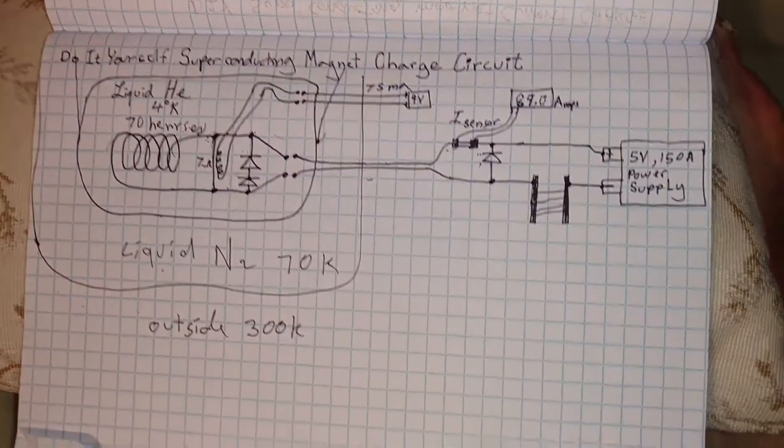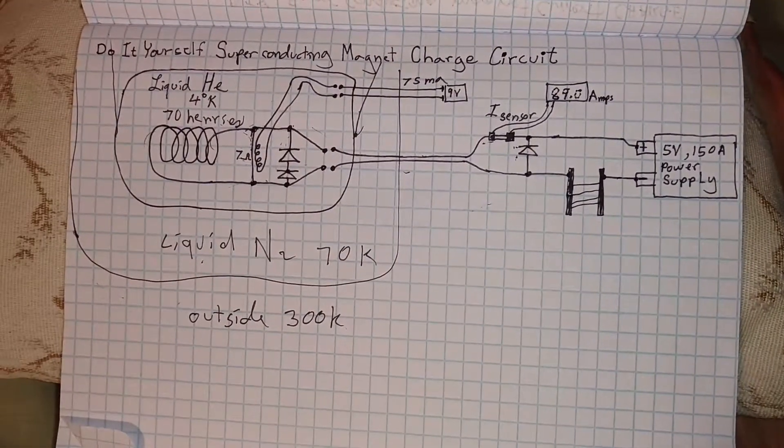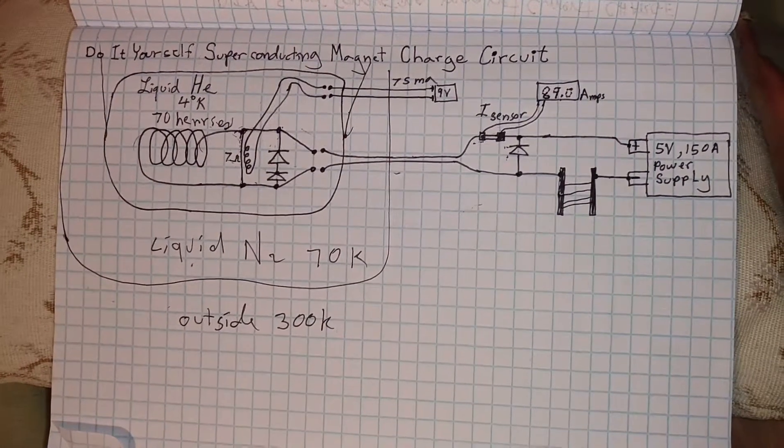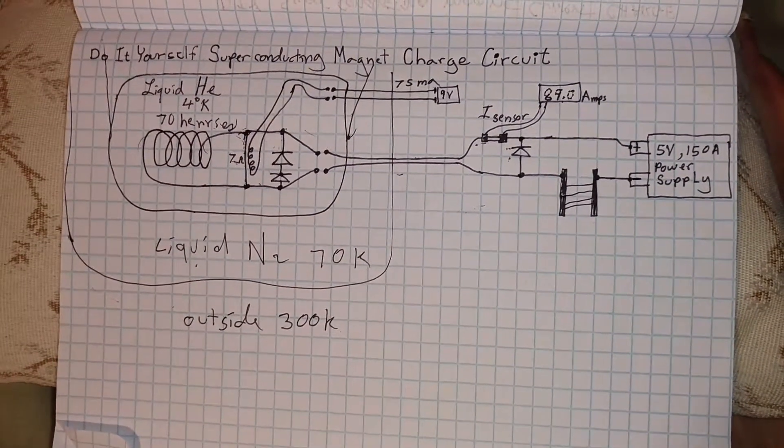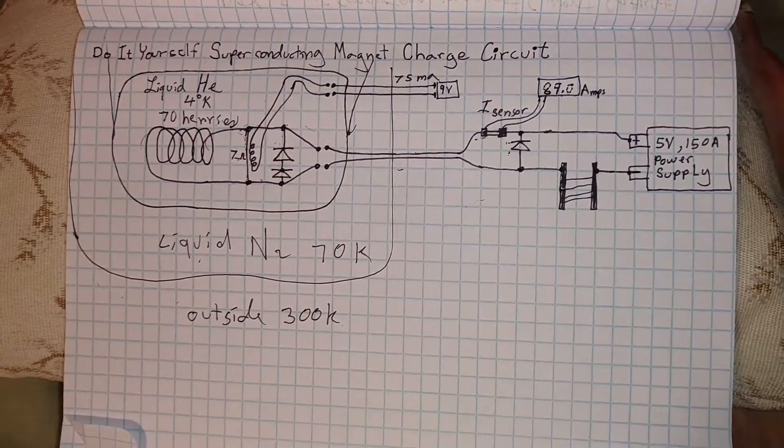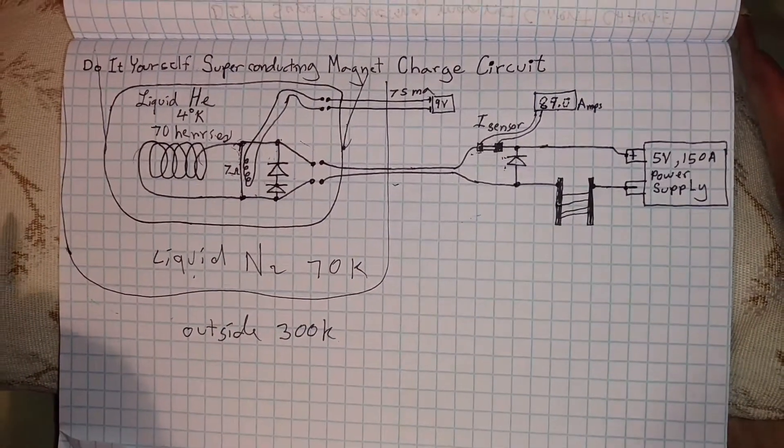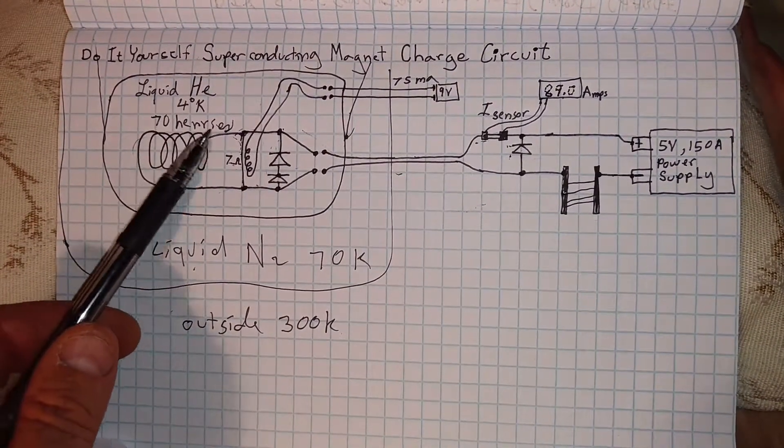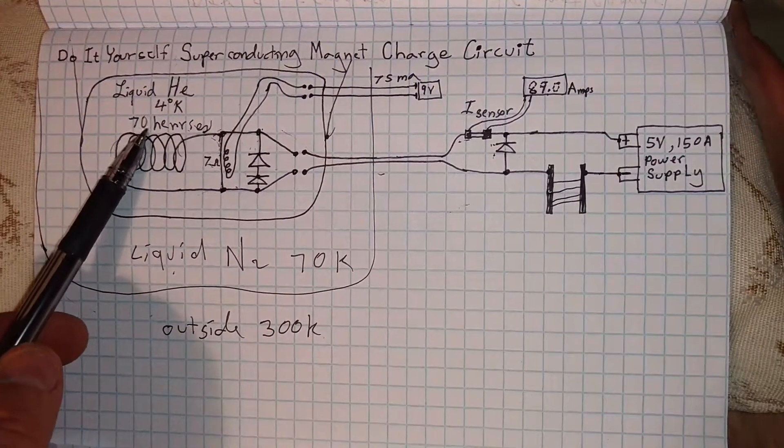Hello ladies and gentlemen, today we're going to talk about how you can charge up your superconducting magnet if you happen to have access to one. Here's my sketch of mine. There's your superconducting coil at 70 Henrys, that's the unit of inductance.